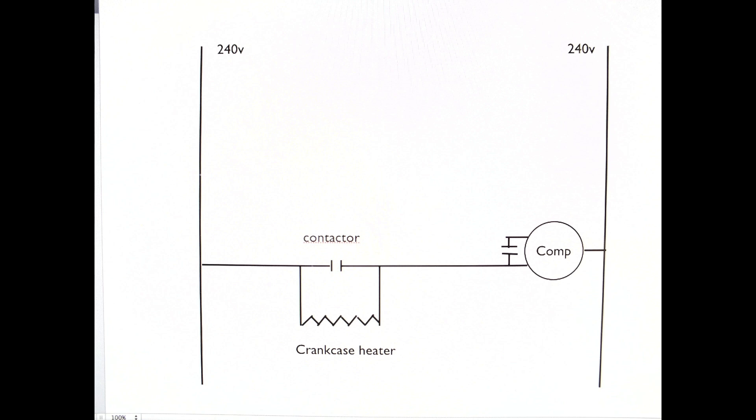So what is happening here is it's just kind of a bypass circuit. When the contactor closes, then the electricity is going to go the easiest way, and that is through the contacts. It's not going to go through the crankcase heater, although there's a tiny little bit goes through it. But it shuts it off because we prefer the crankcase heater to be off when a compressor is running. There's no need to heat the compressor once it's running.